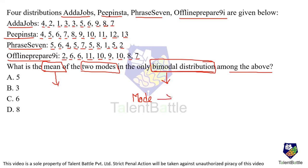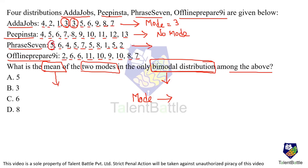First understand what a bimodal distribution is. Mode is the observation that appears most frequently. For Other Jobs, 3 appears twice — so mode = 3. For PeepInsta (4,5,6,7,8,9,10,11,12,13), no observation repeats — there is no mode. For Fresh, 5 appears most frequently — mode = 5.